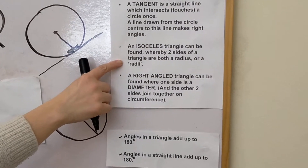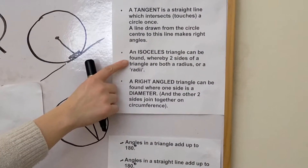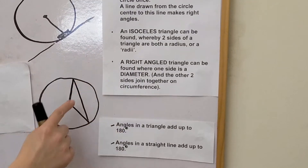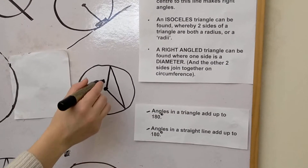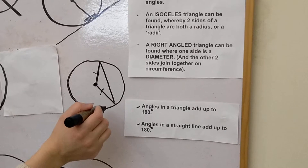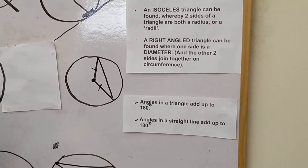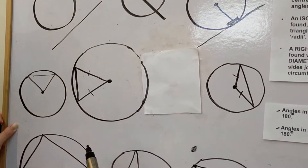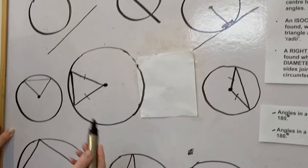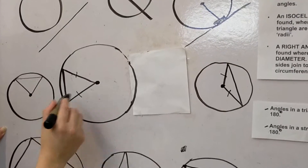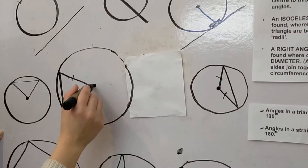The second point says that an isosceles triangle can be found where two sides of the triangle are both a radius — or radii. Looking at the diagram, this side and this side are both radii, so that's an isosceles triangle. Similarly in this example, this is a radius and this is a radius, so this is also an isosceles triangle. A radius is just a line going from the edge of the circle to the centre.